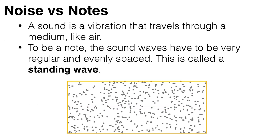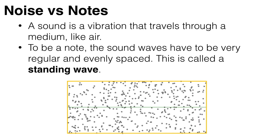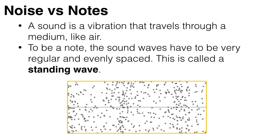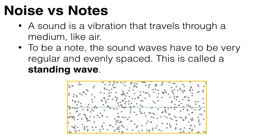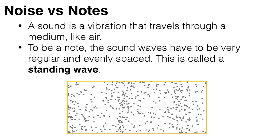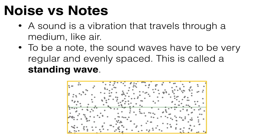As I explained in my previous video, a sound is a vibration that travels through a medium like air which is called a sound wave. And to be a note, the sound waves have to be very regular and evenly spaced. And this type of wave is called a standing wave.